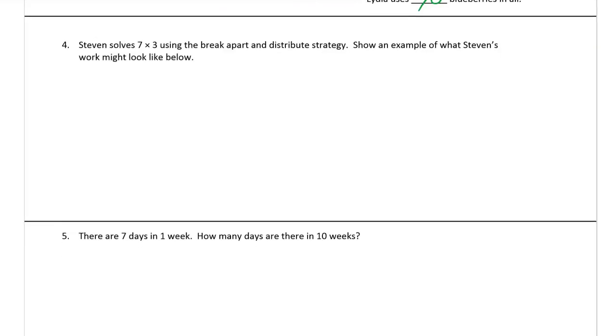Stephen solves seven times three using the break apart and distribute strategy. Show an example of what his work might look like below. So, seven times three. I like to work with fives, twos, ones, and tens whenever I can. The seven is kind of goofy, but I can make that into a five and a two. Here's our number bond. We'll be seven threes, and we're going to split that into five threes and two threes.